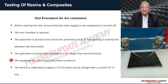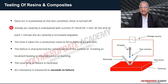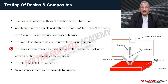The main supply of equipment is switched on. The equipment is calibrated to apply an open circuit voltage of 12.5 kilovolts and the current is adjusted to 10 milliamperes. Once the arc is maintained at this test condition, the timer is started. Initially, arc severity is maintained at 10 milliamperes for one minute, then increased stepwise at the end of each minute. The time for formation of a conductive path (failure) is recorded. Failure is characterized by carbonization of the surface, tracking, localized heating to incandescence, or burning. Total time to failure is recorded, and arc resistance is measured in seconds.